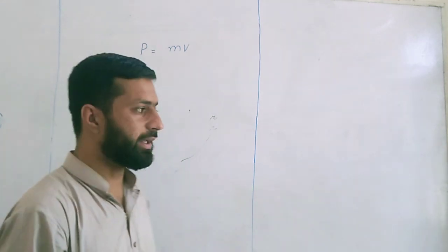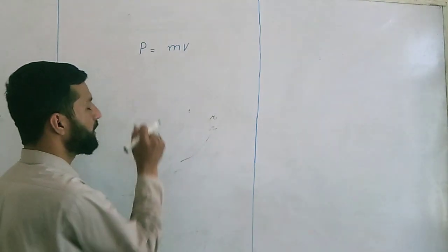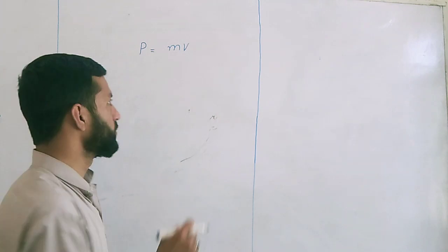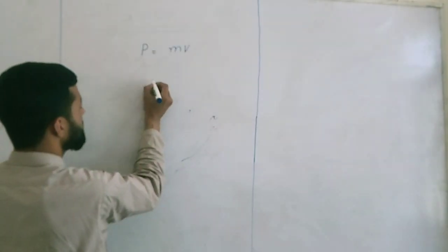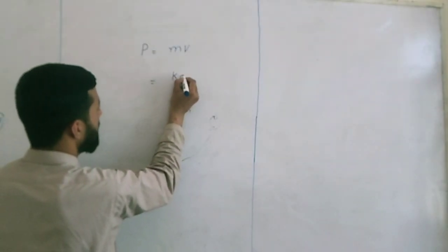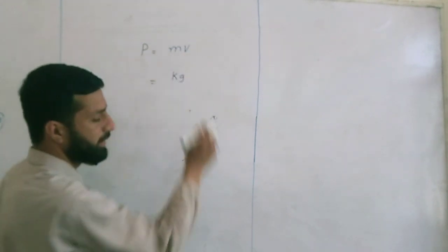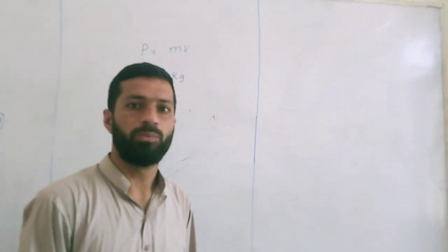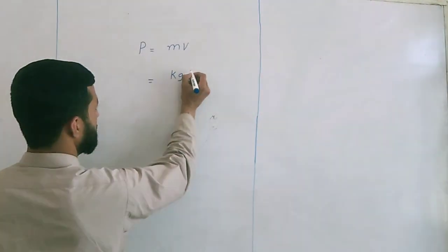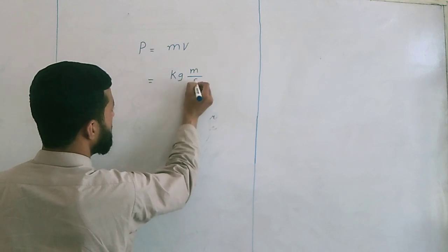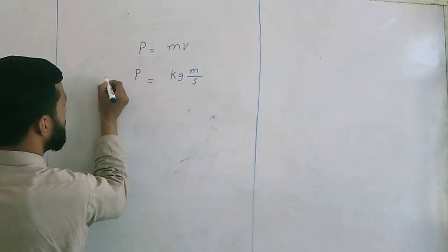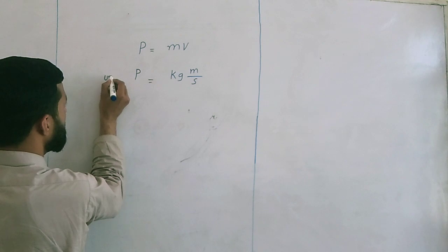If I derive a unit from this equation, the unit of mass is kilogram, and the unit of velocity is meter per second. So, kilogram meter per second is the unit of momentum.